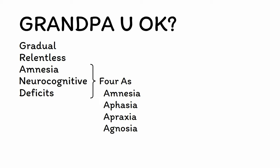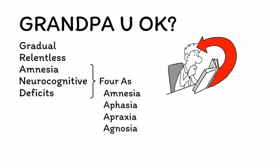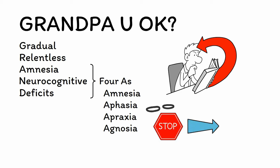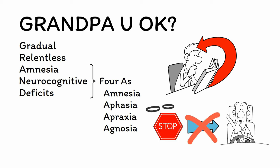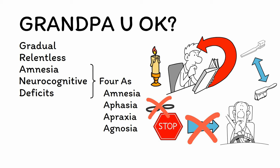The final A is for agnosia, which is an inability to translate what we perceive with our senses into a cohesive signal that we can act upon. For example, when we see a stop sign, we need to be able to not only recognize its basic attributes — like the fact that it's red — but also to translate the intended meaning of the object, which means we need to bring our car to a halt. Patients with Alzheimer's disease tend to first have difficulty recognizing the meaning of an object, and as the disease progresses they may even struggle to recognize the object itself. In the final stages, even basic signals like feeling heat from a fire or the need to urinate can go unrecognized, leading to injury, infection, and death.